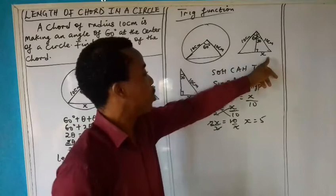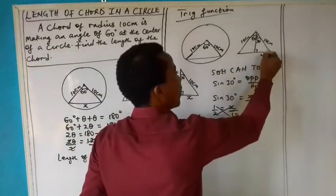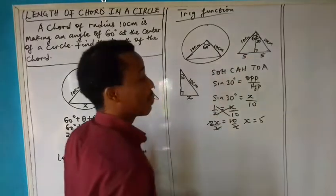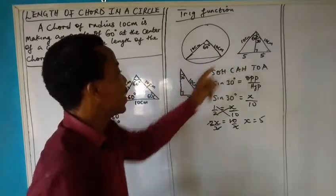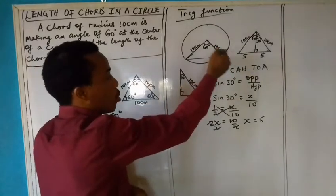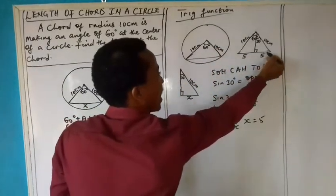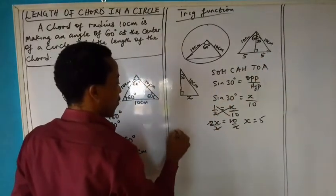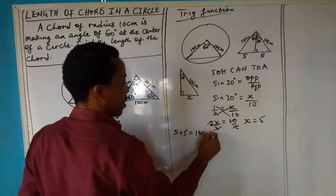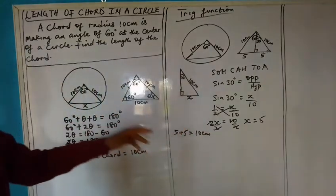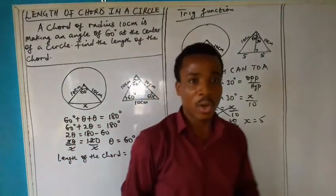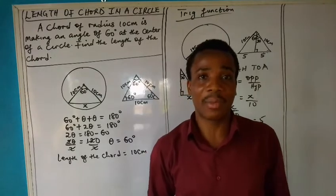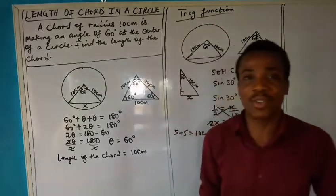So we have found X to be 5. But remember, if this side is 5, the other side will also be 5. So to find the full length of the chord, we multiply by 2: 5 plus 5 gives us 10 centimeters. So these are the two ways in which you can find the length of such a chord. I hope this video was helpful to you. If it was, smash the subscribe button, leave a like, and share this video. I'll see you in the next video — thanks so much for viewing.